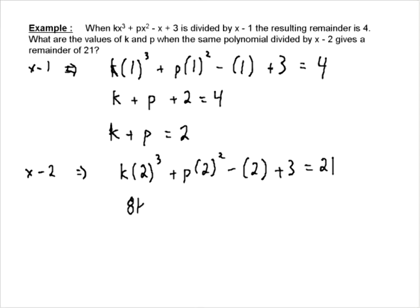So we're going to have 8k plus 4p. Negative 2 plus 3 is plus 1 equals 21. So 8k plus 4p is equal to 20. And we can actually divide everything by 4 and we get 2k plus p is equal to 5. So now we have our two equations. We have two unknowns. Well, what do we have to do? Of course, it's just a system of equations.